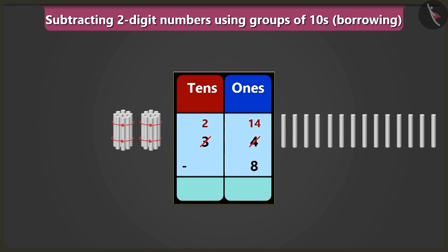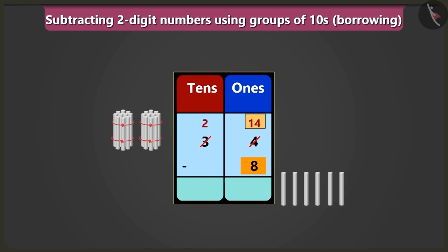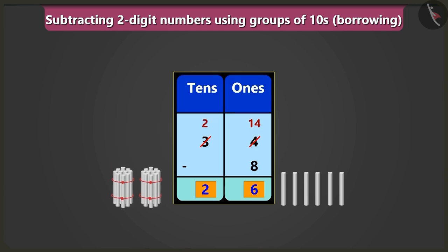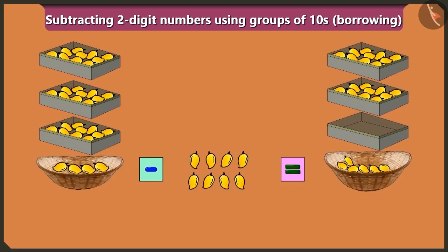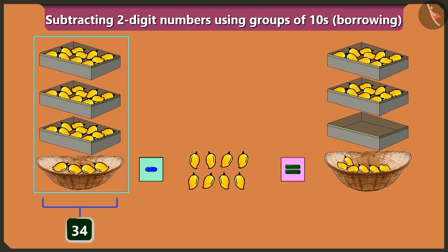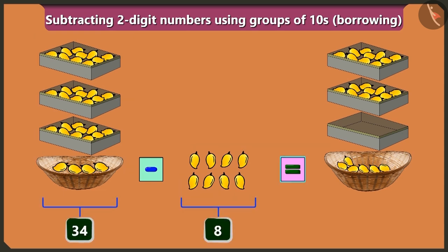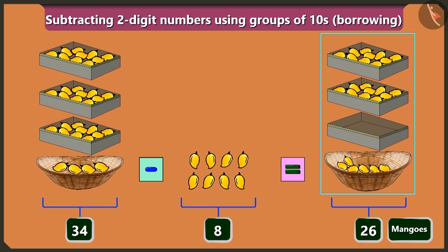Now if we subtract eight from fourteen in the place of ones, then we will have one, two, three, four, five and six left. So we will write six in the place of ones. Now we will have two tens in the place of tens, so we will have two tens only. The answer will be twenty-six. So this way, thirty-four minus eight equals twenty-six mangoes.